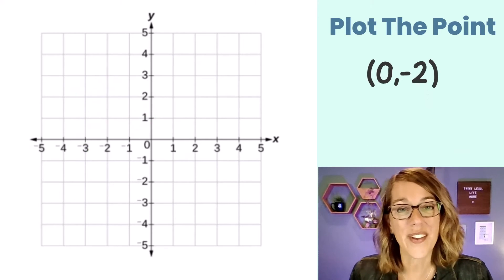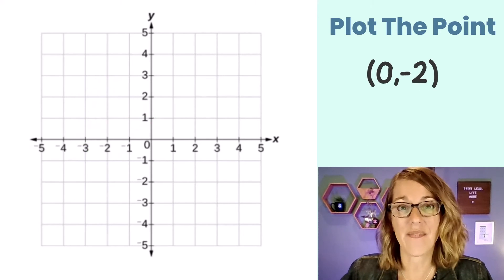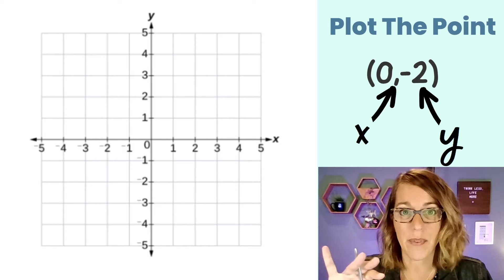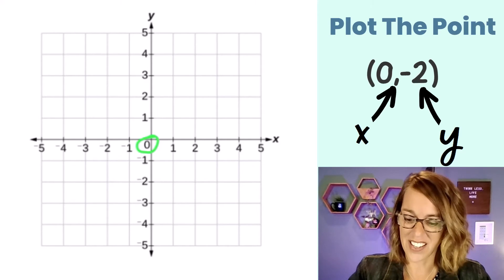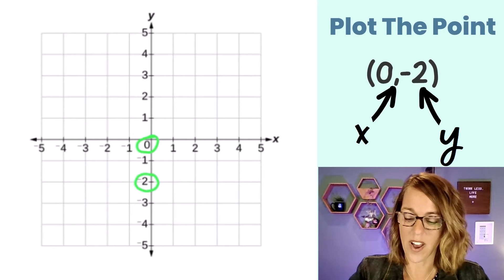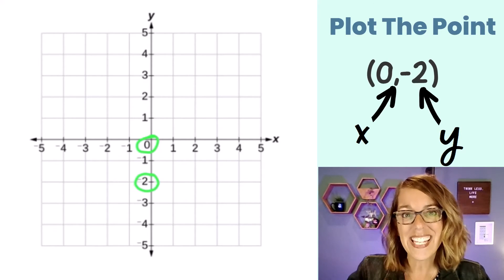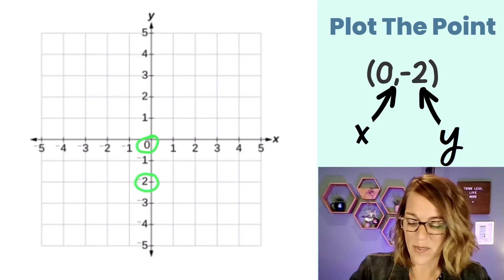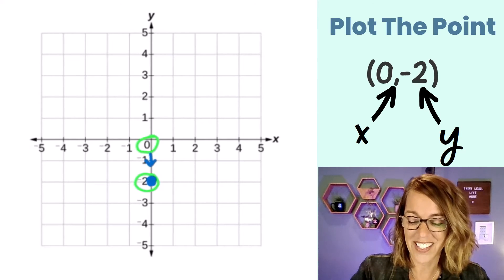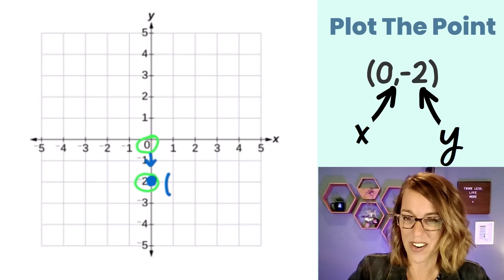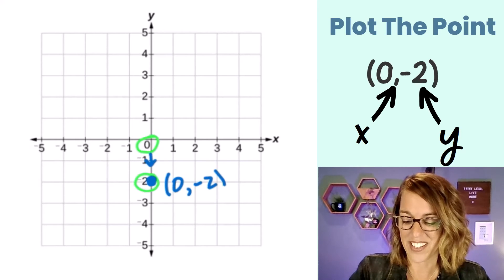Next, let's plot (0,-2). I again have my X and Y coordinates alphabetically listed. So I can find 0 on the X-axis and -2 on the Y-axis. This one ends up being a point on the Y-axis. If I line them up, that's exactly where I would land: (0,-2).